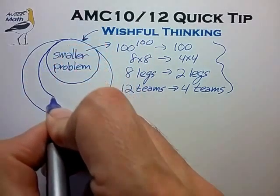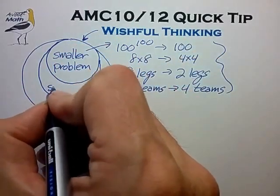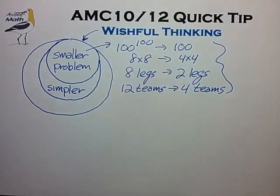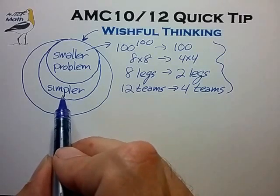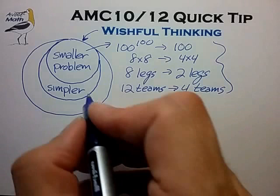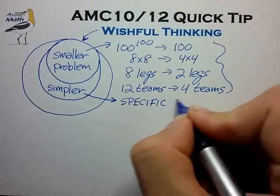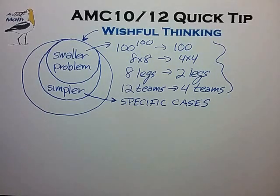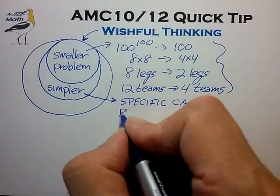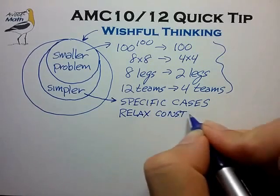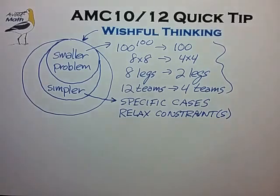Another related wishful thinking method is one I like to call wishing for the simpler problem. A smaller problem is certainly a simpler problem, but the simpler problem is a broader concept. Two example techniques are: first, look for specific cases — if a general problem is too hard to get your head around, try to identify some specific cases to help get started. Second, relax some of the constraints of the problem — if some constraints are very difficult to incorporate early on, try to ignore or relax them at least initially.